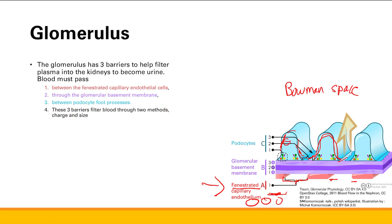What you don't see in this picture is that all of these barriers have a negative charge to them. Negatively charged ions and proteins get repelled from these barriers and go into the efferent arteriole. The other thing is size — there is a limited size for particles to get through, so even a very large protein is not going to make it.